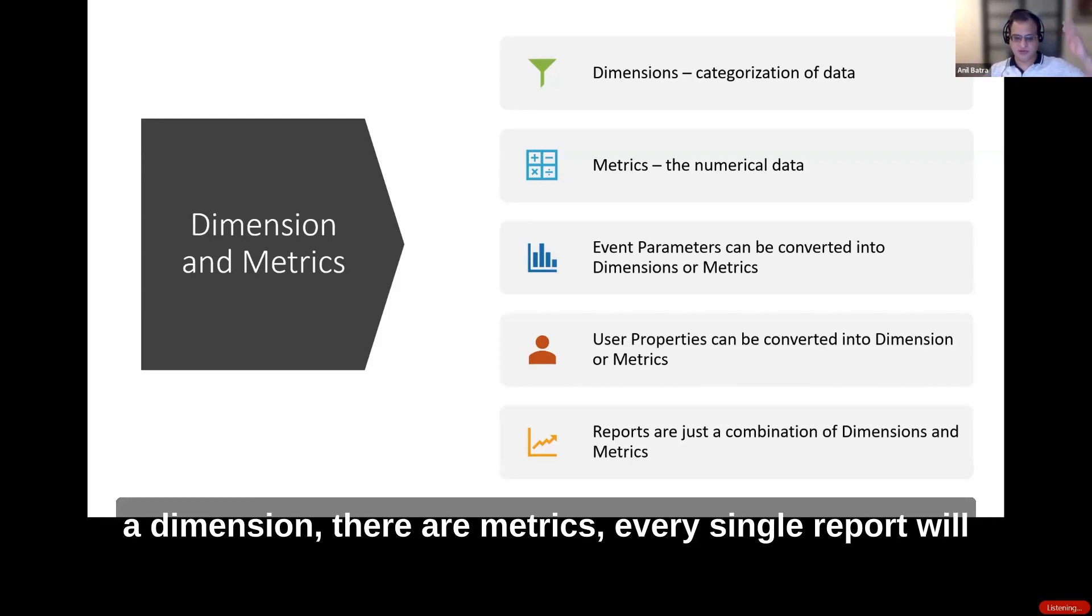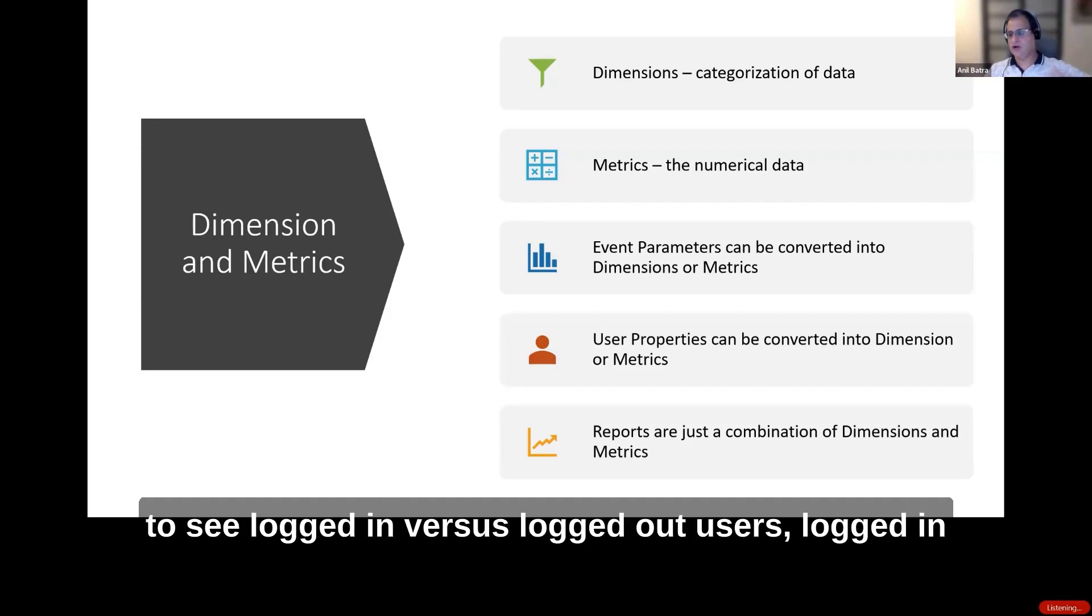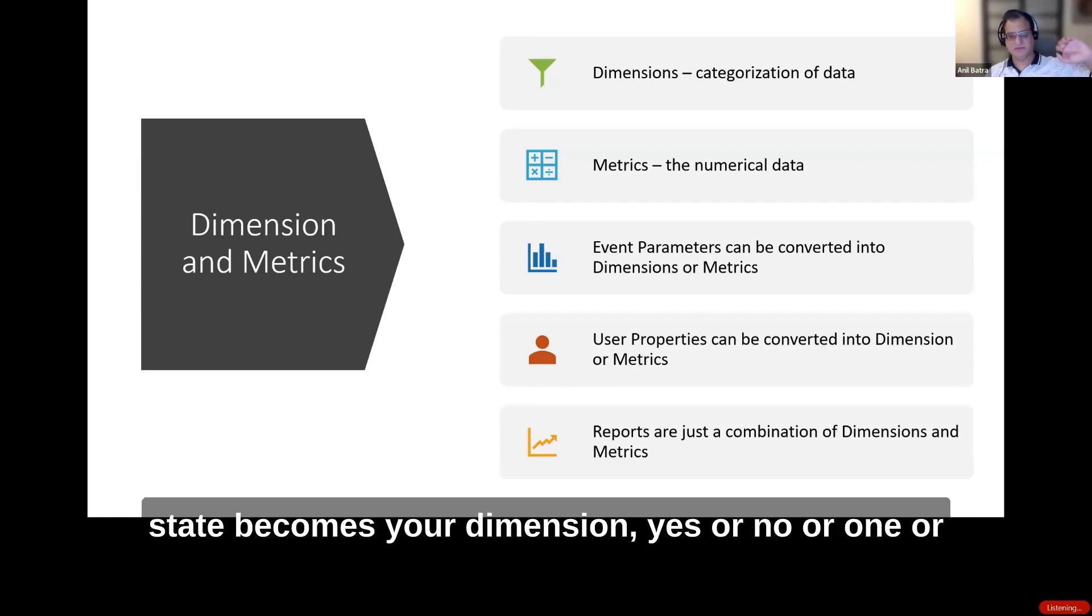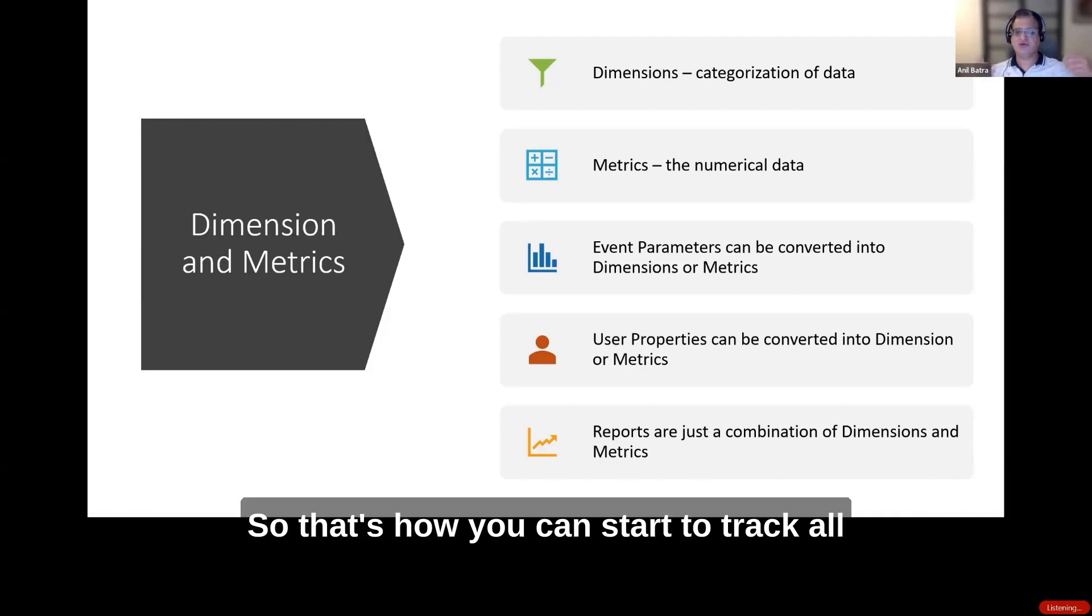Every single report will show you there is a chart, dimensions and metrics. Once you convert these properties, if you want to see logged in versus logged out users, logged in state becomes your dimension. Yes or no, one or zero, whatever you want to pass - that's how it's rolled up. The count of those becomes your metrics. That's how you can start to track all these things.